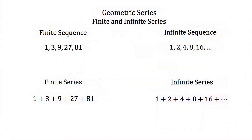There are two different types of geometric series: finite and infinite. If we have a finite sequence, like 1, 3, 9, 27, and 81, notice that 81 is the last term. The sequence ends at 81.